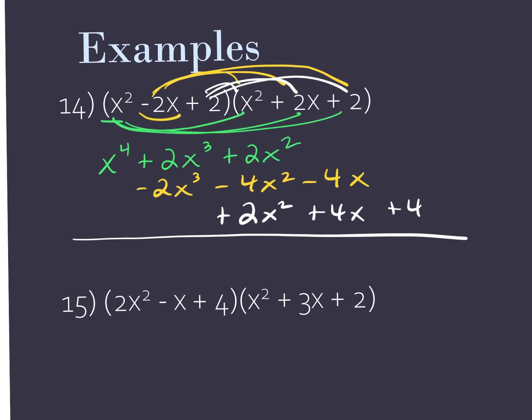It's already lined up for me, so now I'm just going to add straight up and down. I bring down — there's nothing to add to the x to the fourth. These two end up canceling out; I'm not going to put a 0 here so I'll just get rid of it. When I add 2 minus 4 is negative 2 plus 2, this one's gone as well. Same thing here. So my final answer is just x to the fourth plus 4.